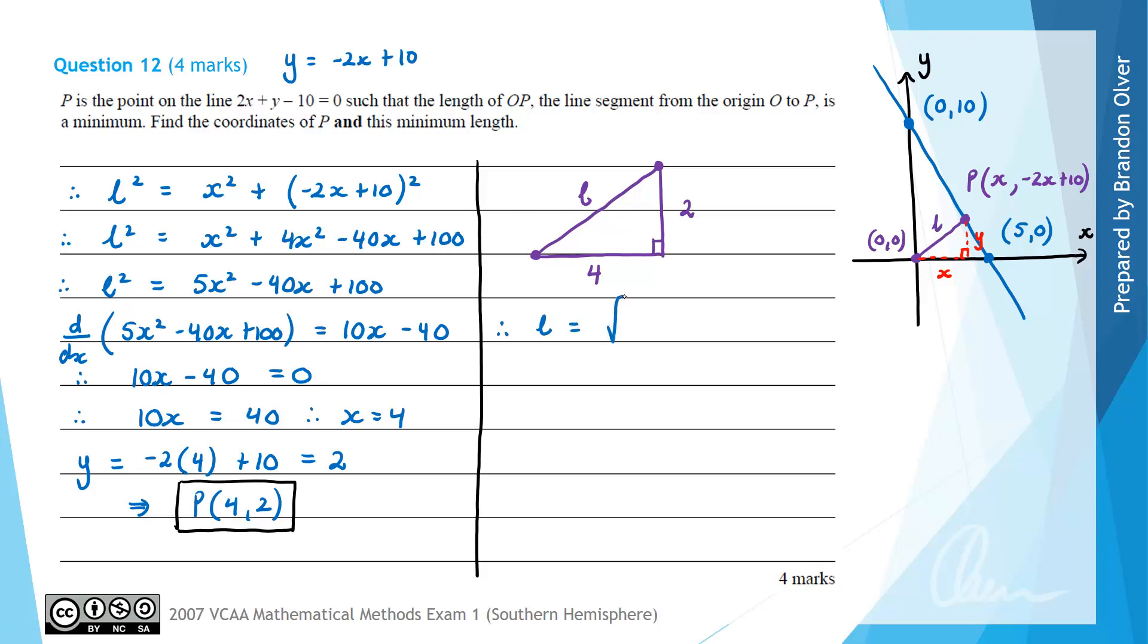Therefore, the length L is equal to the square root of, and it's going to be 4 squared plus 2 squared. Therefore, L is equal to the square root of 16 plus 4 is 20. And that means L is equal to the square root of 4 times the square root of 5 when we simplify. So the length L, when it's a minimum, is 2 root 5 units in length. So that is the second part that we needed for this question.